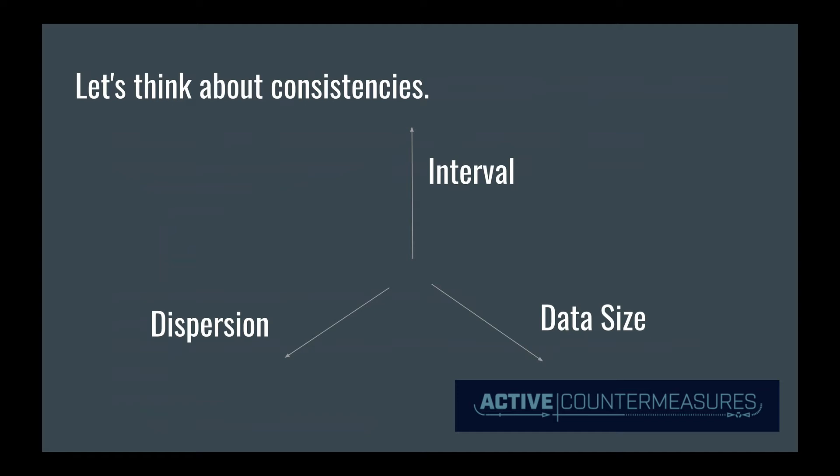Now, believe it or not, consistencies are kind of inconsistent. A normal human being going to the internet isn't clicking a link every five seconds at a very regular interval. They're not always making sure that every single packet they sent to Gmail is the exact same size, and they're not trying to make sure that their histogram is evenly dispersed. So when we're looking for these consistencies, we're actually looking for automated communication leaving a network. And yes, you will see automated communication to different organizations like Microsoft and Google and Akamai, and we can easily filter that data out to try to sift down to find this potentially malicious activity that exists in an organization.